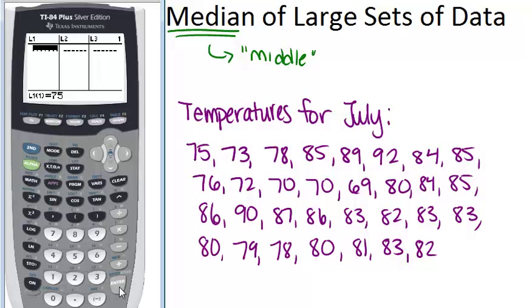So start with 75, 73, and so on. And you don't need to worry about reordering the numbers before you enter it in. The calculator can actually re-sort the numbers into order if you want, but you can also compute the median without having to do that. The calculator can do that for you.